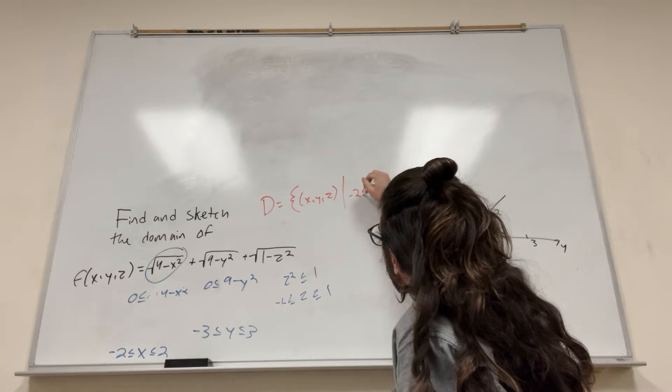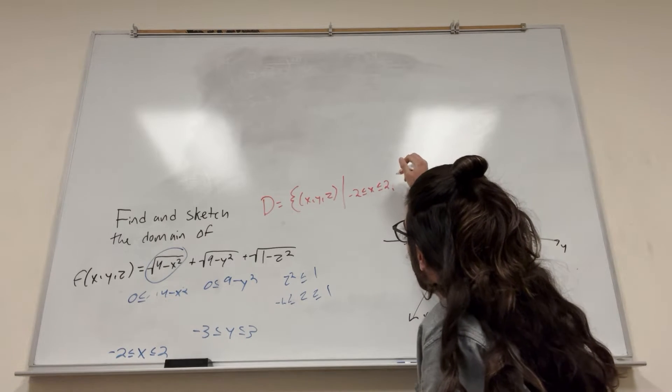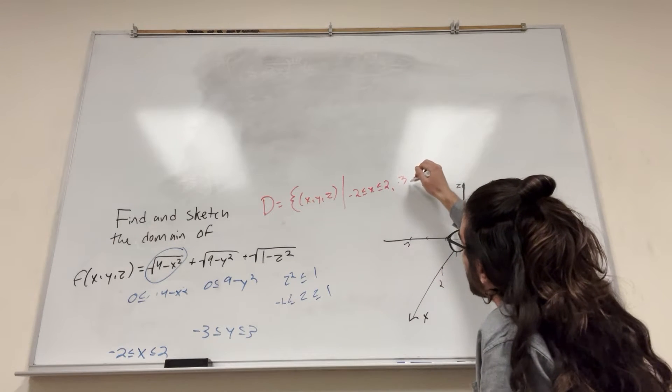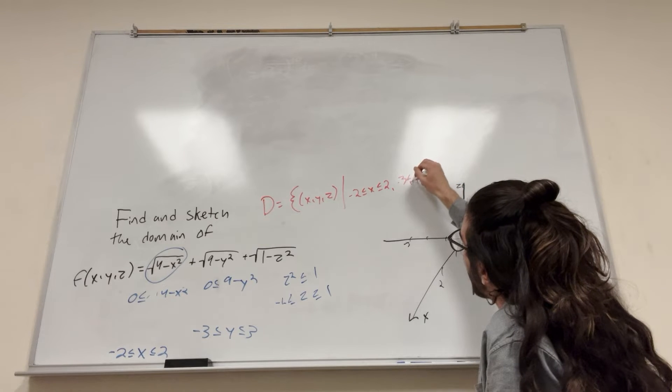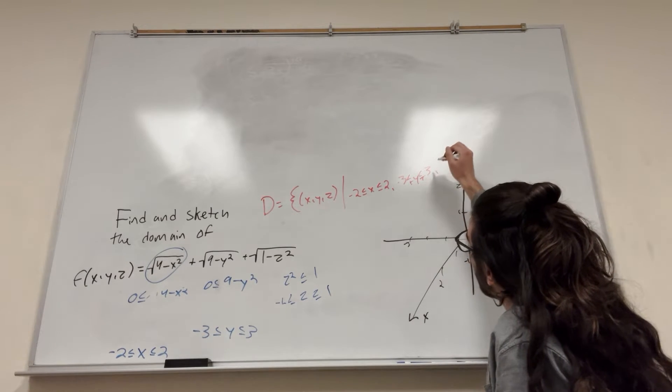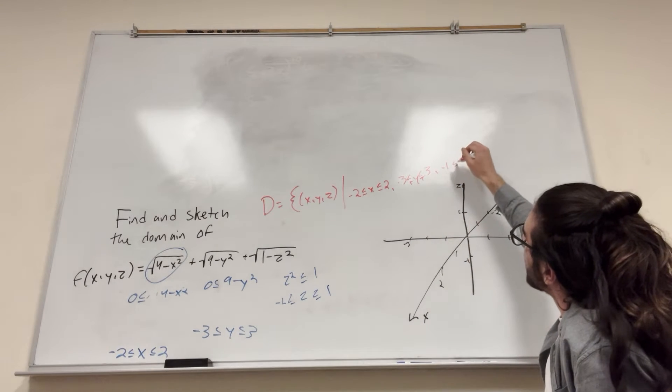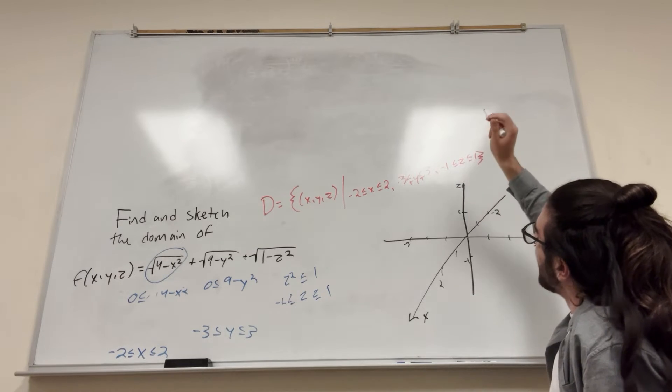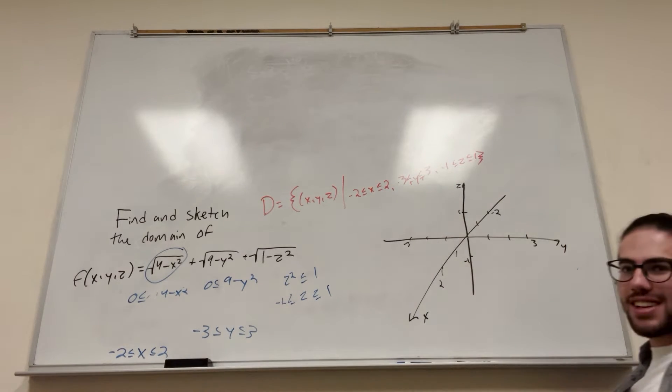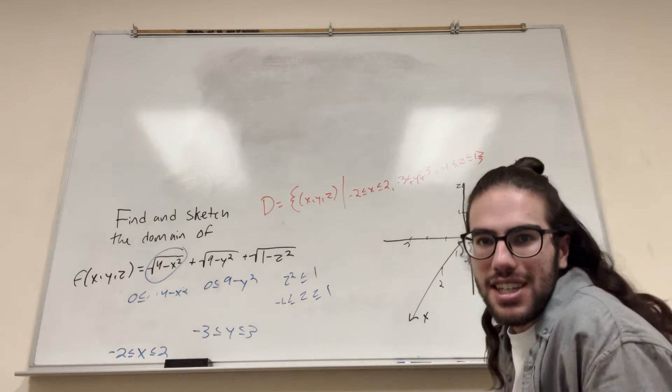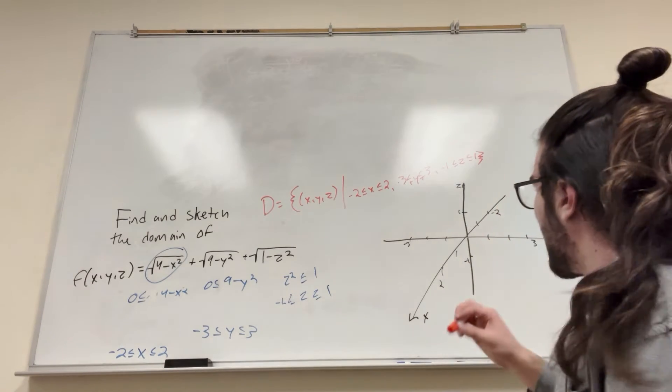So then you have negative two is less than or equal to x is less than or equal to two, negative three is less than or equal to y is less than or equal to three, and negative one is less than or equal to z is less than or equal to one. Boom, that's our domain. That's how you write it out. Don't write it all sideways like I did. You can see it, right? It's in the glare, I'm sorry, but you know what it is.